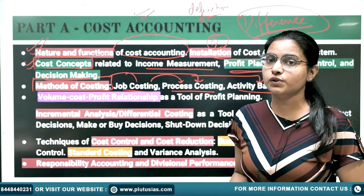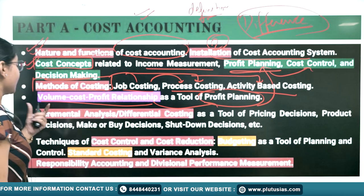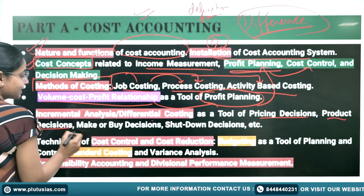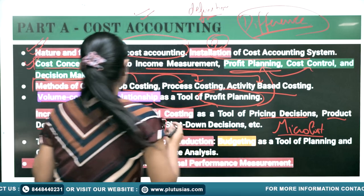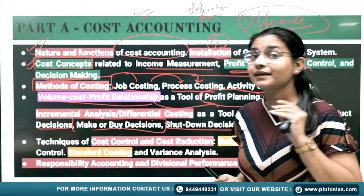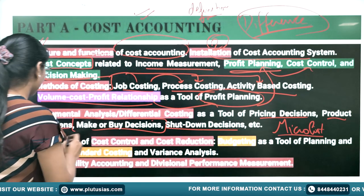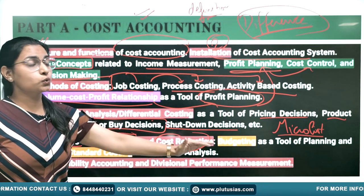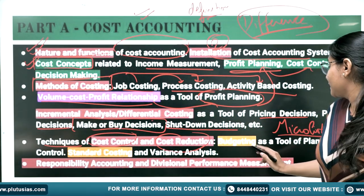The difference between Job and Process Costing has already been asked in previous year questions. Then Volume-Cost-Profit relationship as a tool of profit planning has also appeared. Then Incremental Analysis, Differential Costing as tools of pricing decisions, product decisions, make-or-buy decisions, and shutdown decisions. You should see the micro list — if a chapter is 50 pages but you skip 'shutdown decisions,' it will not be helpful. The syllabus is your real guidance. Then Techniques of Cost Control and Cost Reduction — their difference has already been asked.